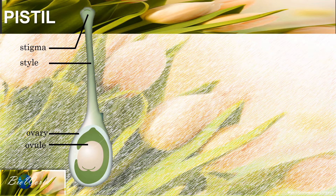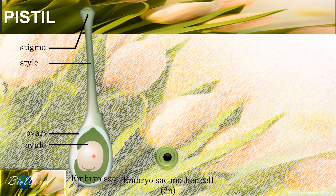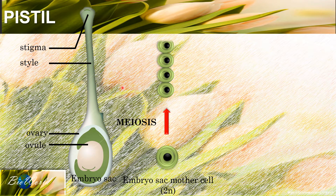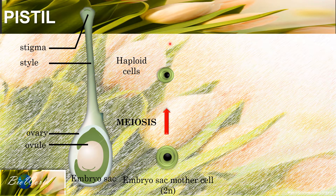Next, we look at the formation of the female gamete. This occurs at the ovule. The space in the ovule is called the embryo sac. Inside the embryo sac there will be one embryo sac mother cell. This diploid cell will carry out meiosis to produce four haploid cells, but out of the four haploid cells only one will survive. That one haploid cell will carry out mitosis three times.